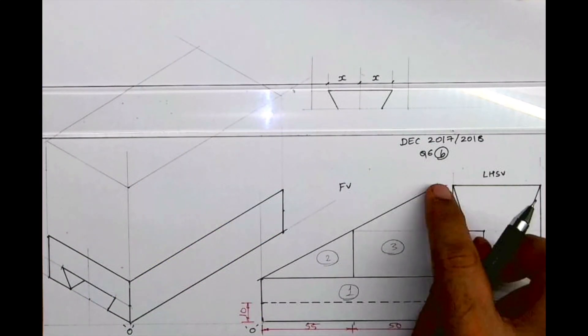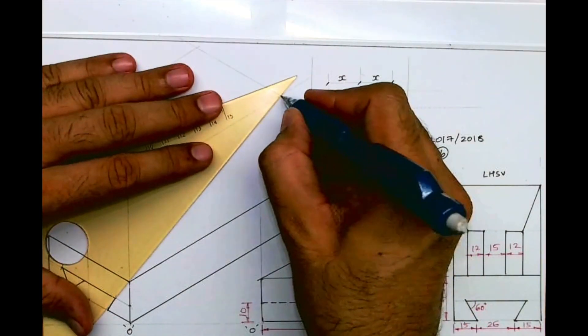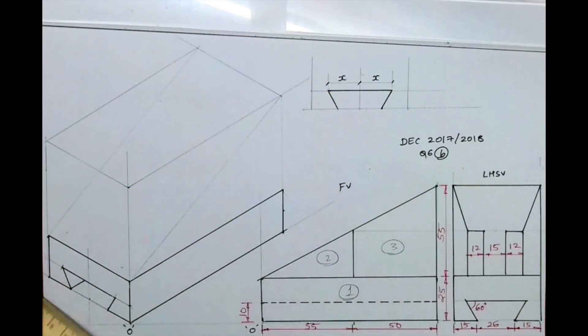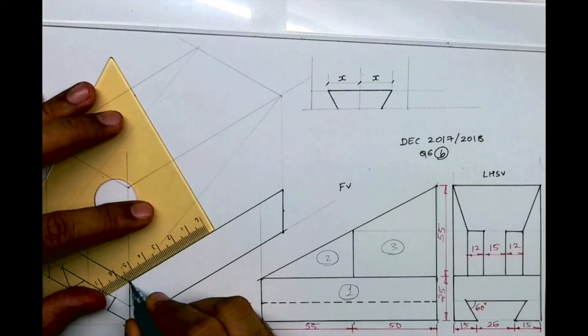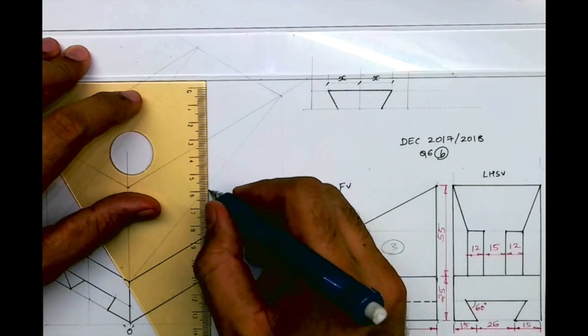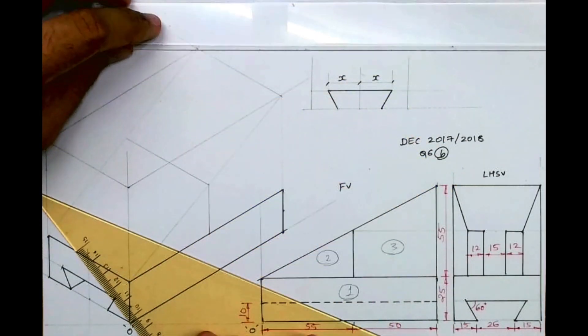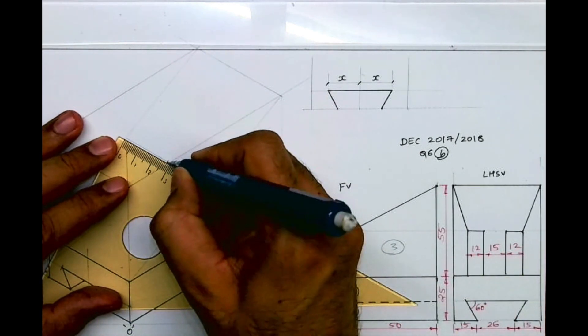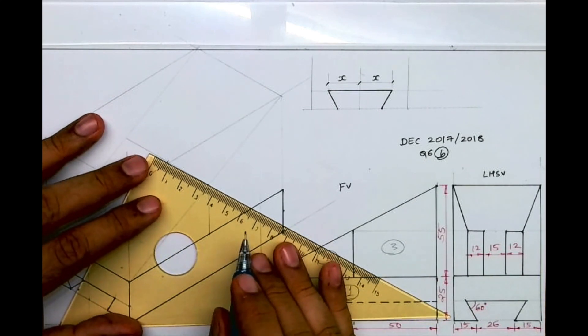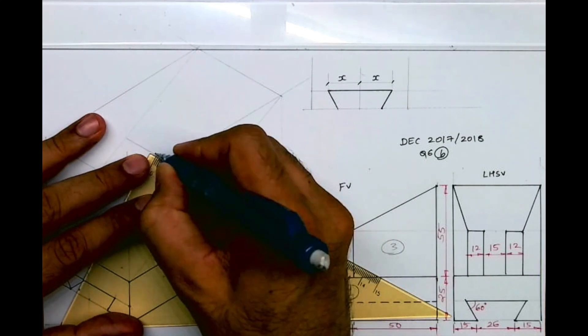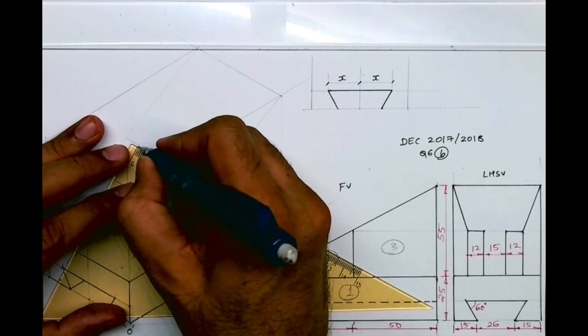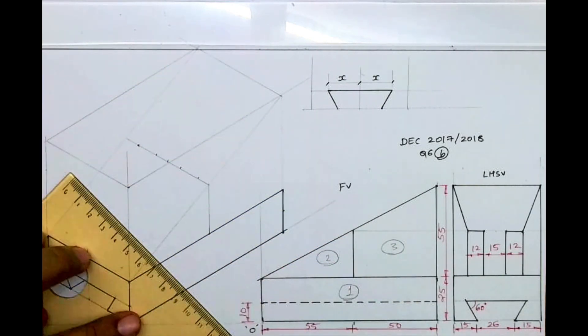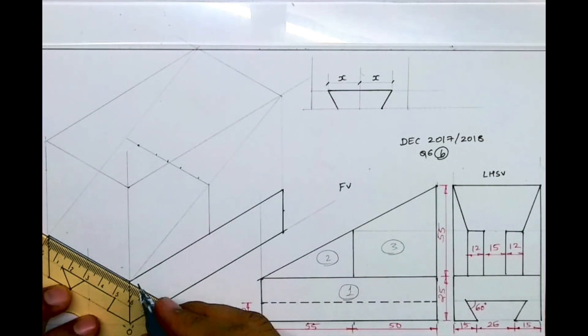After that, we need to draw this slope. Remember that whenever you have a slope, you draw the slope first, and even if you see there is one line in between that slope, but first you will draw the slope. Then you mark 55, draw a vertical line, and again you draw a line. Now this part is 12, 15, 12, so I will take the midpoint and I will take 7.5, 7.5. And then I will take 12, 12, slightly around the edge. And on the other side, down also, I will take the midpoint and I will take 7.5, 7.5.